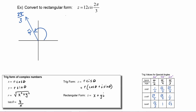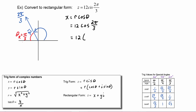Using our definitions, we know x will be r cosine of theta, which is twelve times the cosine of two pi over three. We know our reference angle is pi over three. Looking at our special angle chart, we go to the pi over three column in the cosine row — the value is one-half, and in quadrant two cosine is negative. So our x value is going to be negative six.